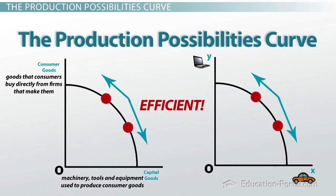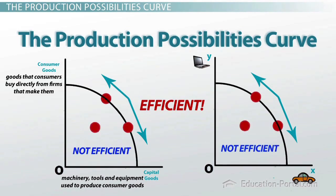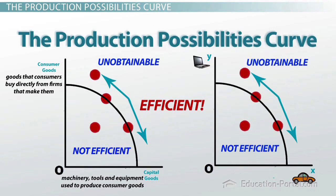Movement along this curve reveals the trade-offs that are required to produce more or less of a good. Any point inside the curve is not efficient, and any point outside the curve is unobtainable.